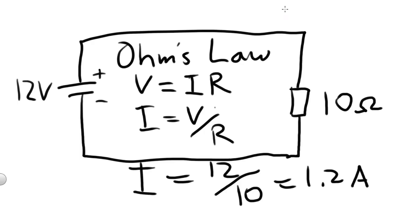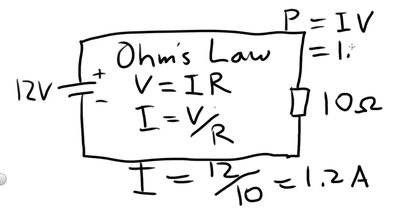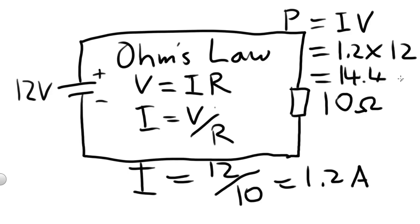To calculate the power of this circuit, we can use the formula P equals I times V — the current times the voltage. I is 1.2 multiplied by the voltage of 12 volts, which will equal 14.4 watts. So that's the power.